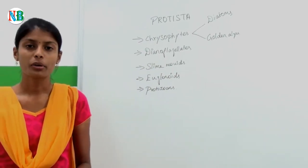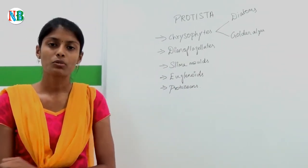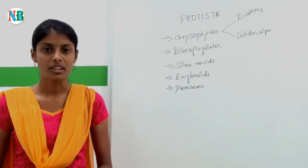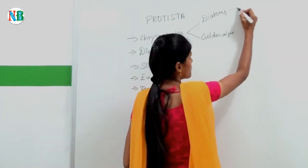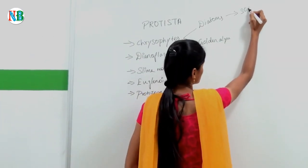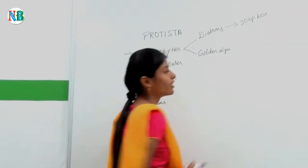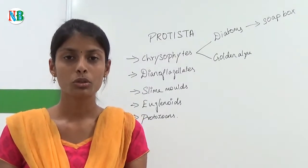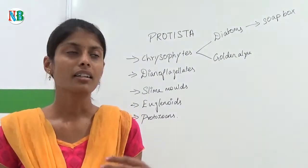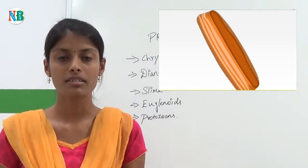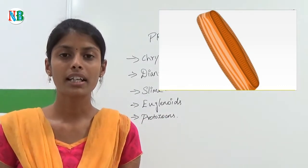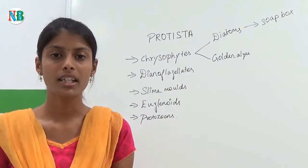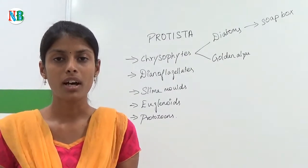Chrysophytes are found in fresh water where they flow passively, and most of them are found in lakes. To remember diatoms, you have to remember a soapbox. In a soapbox, two shells are connected — similarly in diatoms, their cell wall is connected and silica is embedded in it.